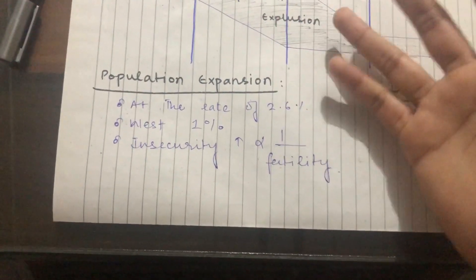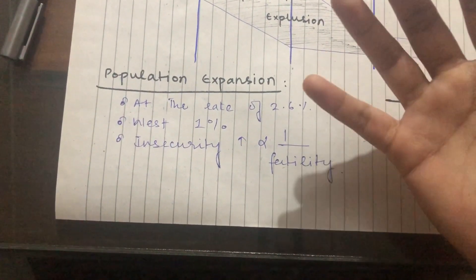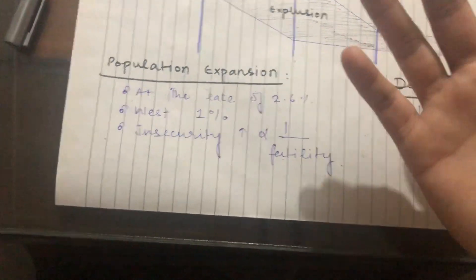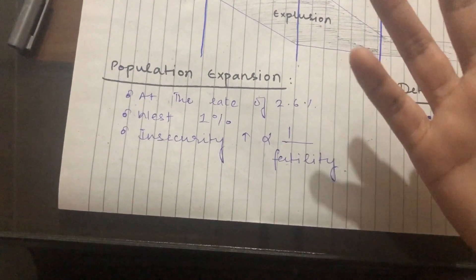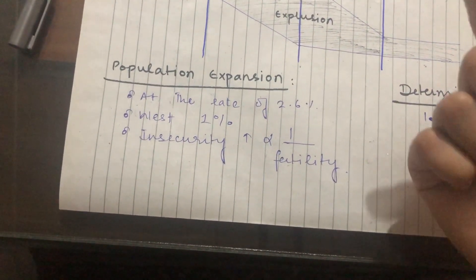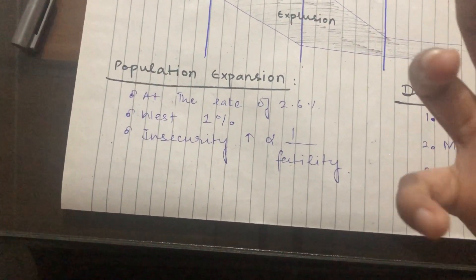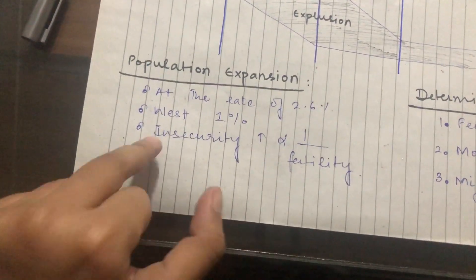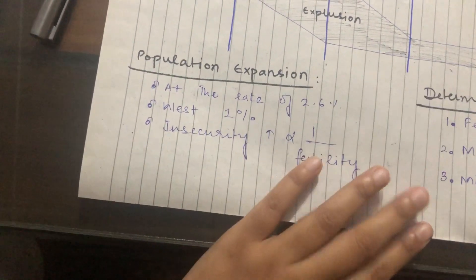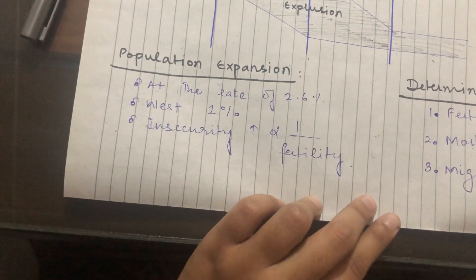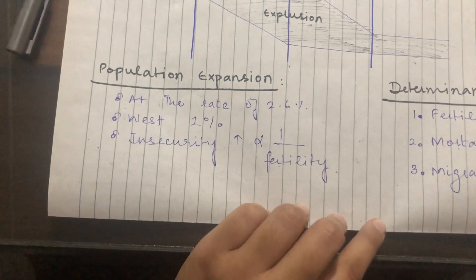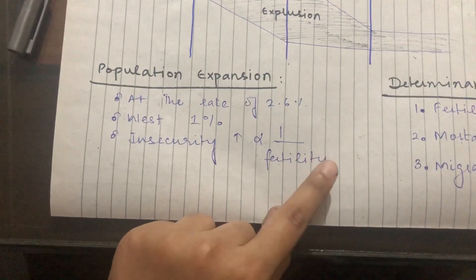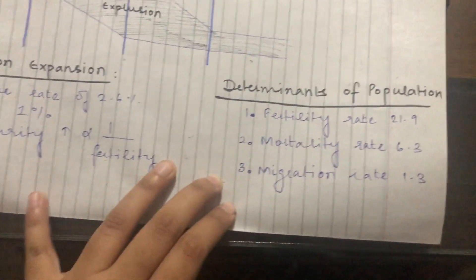Due to different global scenarios and natural disasters, climate change is causing insecurity. Financial crises and unstable geostrategic conditions are also creating insecurity. As a result, fertility is decreasing because people are concerned about their progeny — they consider the world an insecure place and choose to have fewer children. After this, we will see the determinants of population.